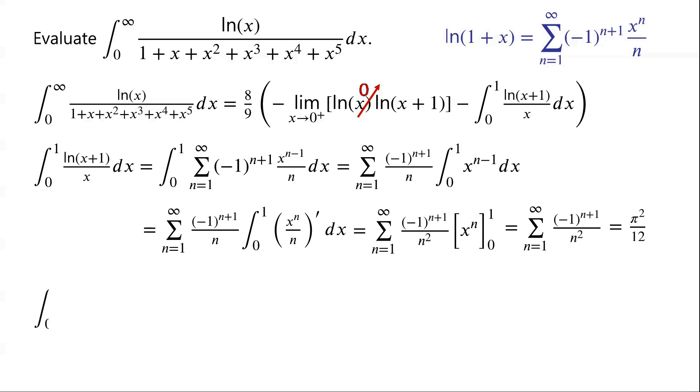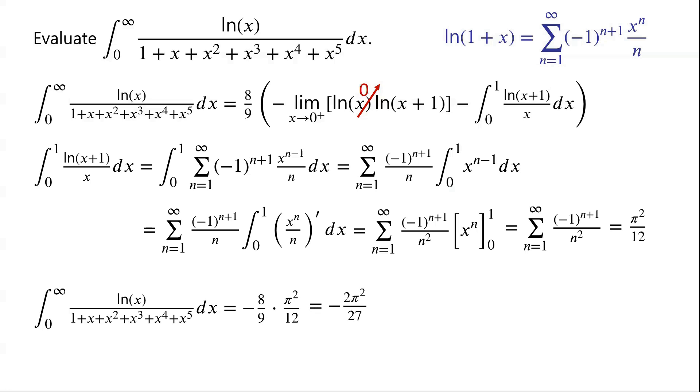Therefore, the original integral equals negative (8/9) times π²/12, which equals negative 2π²/27.